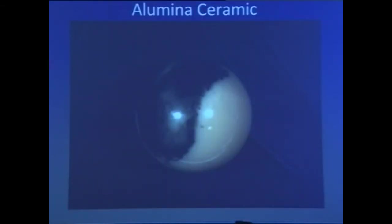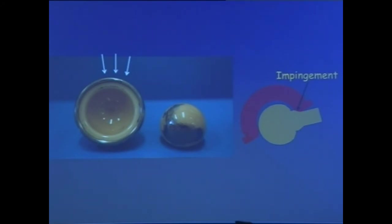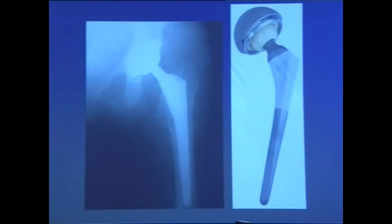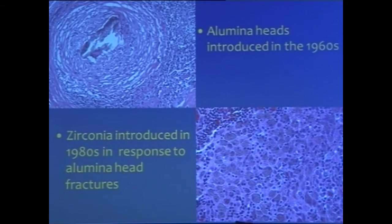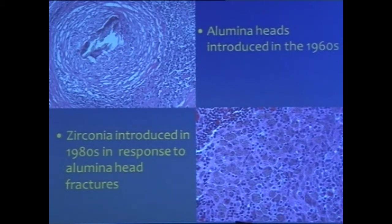Moving on to alumina ceramic — you can see that the coating has been completely denuded, exposing the underlying metal. Here is an impingement in this region resulting in denudation of the ceramic coating. Microscopically, there is a tremendous amount of foreign body giant cell reaction, almost looking like a vasculitis. Then came zirconia, introduced in 1980 — and this also shows tremendous shedding of punctate gray-blue discolored material.